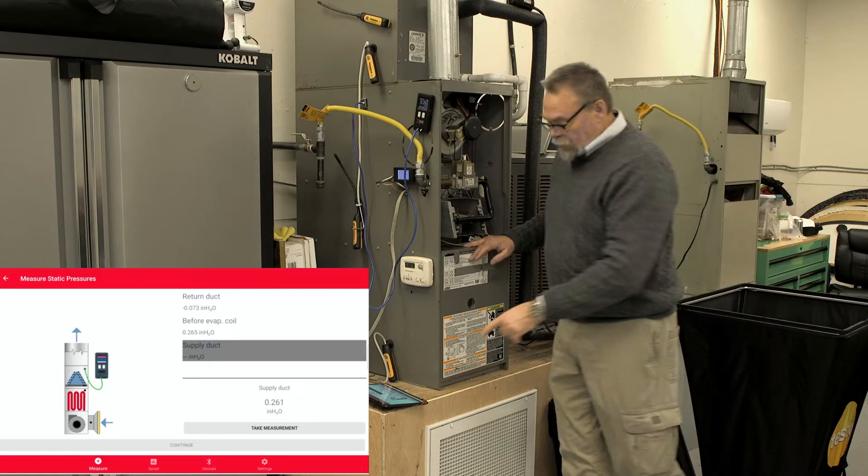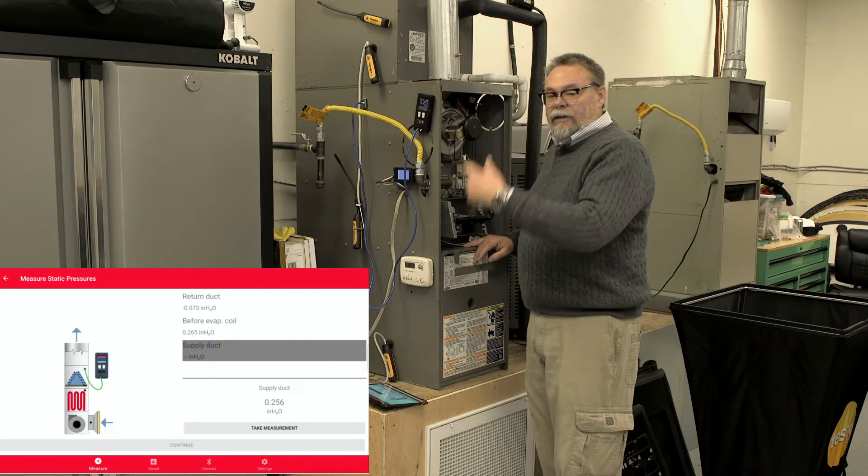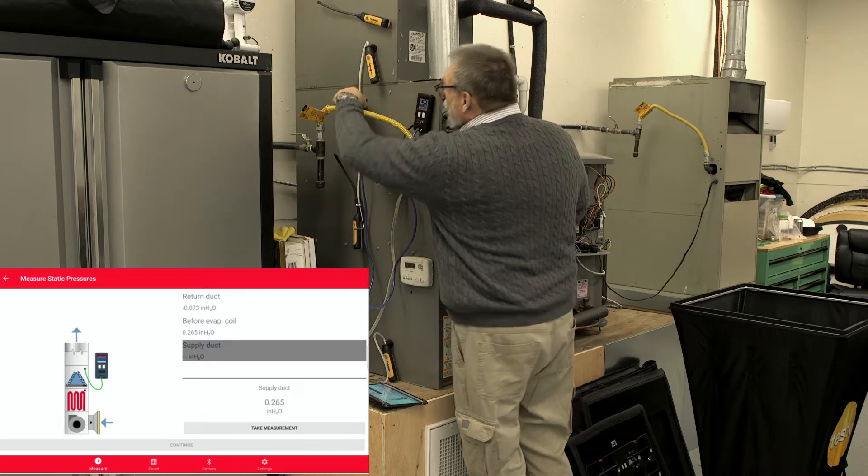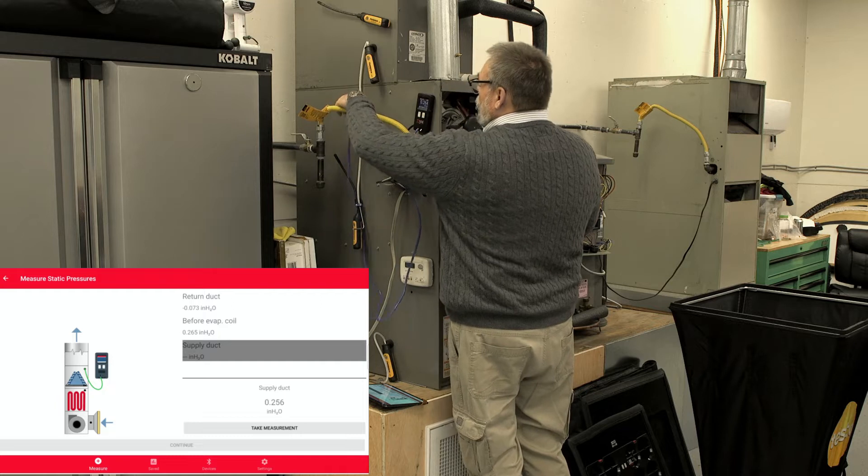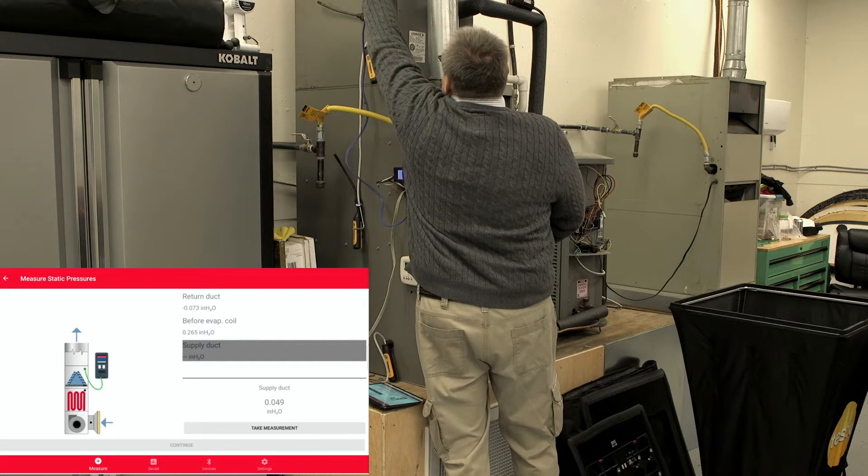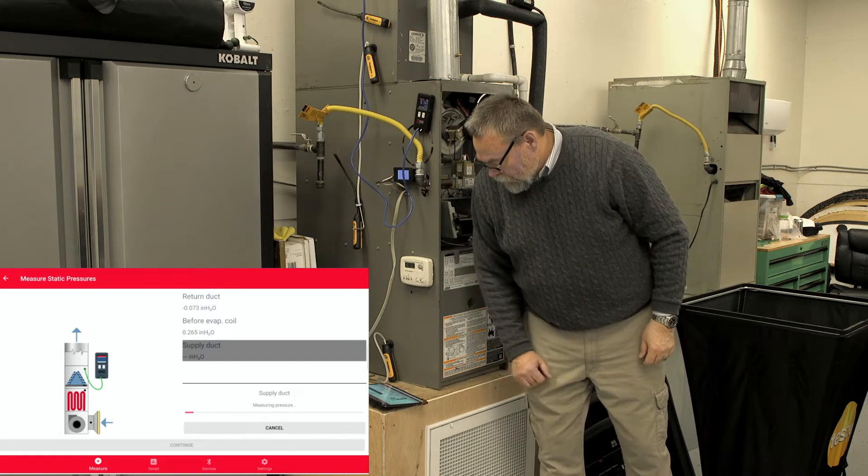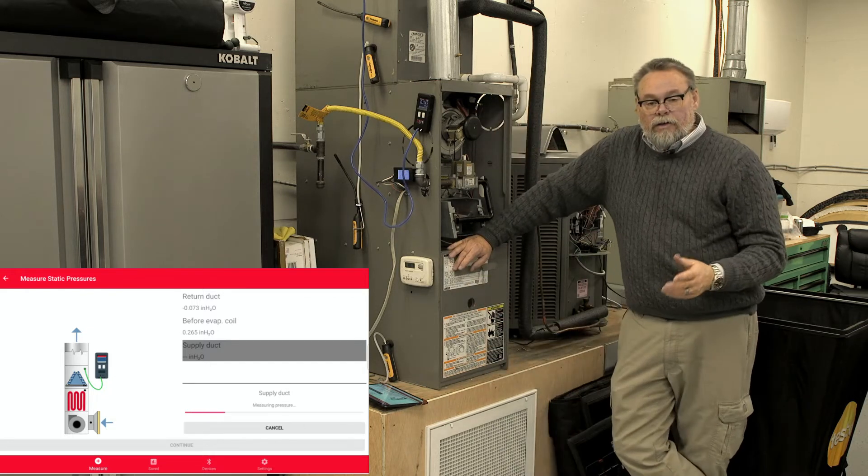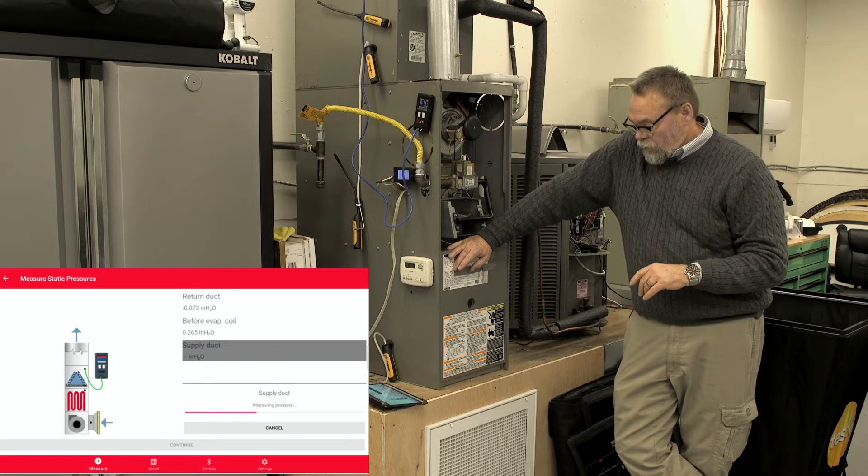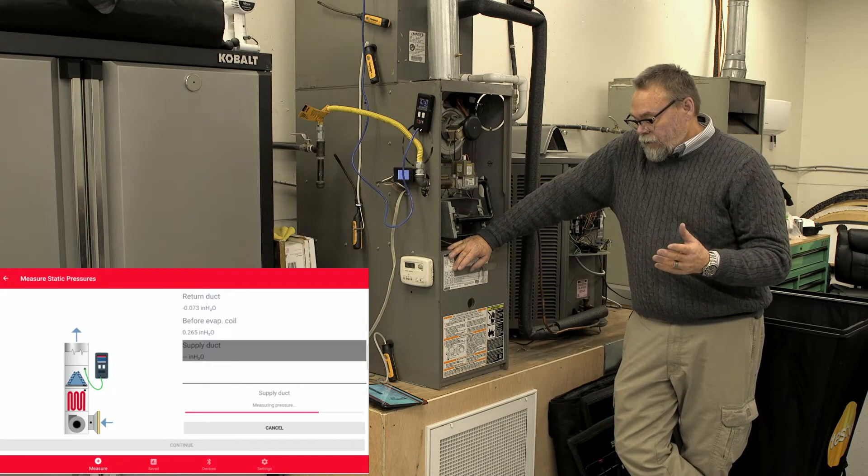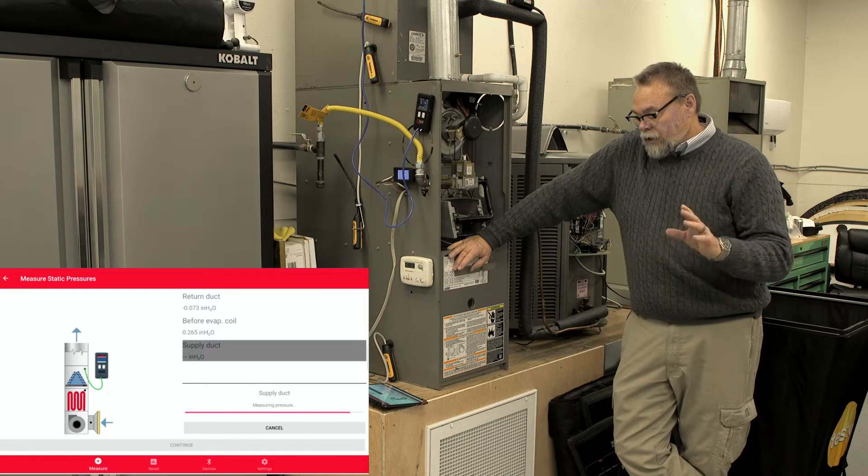Now it tells me to put it in the supply side on the other side of the coil, and I have a hole drilled already up there, so I just got to take it, put it up in the top right there, and we're good to go. Hit Take My Measurement. This only takes a second. And then you're just going to hit Continue.